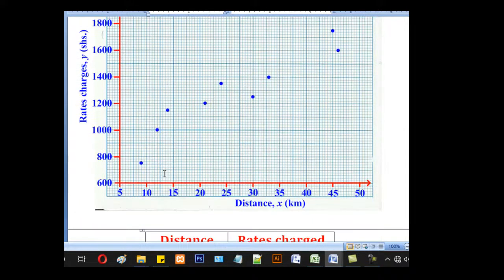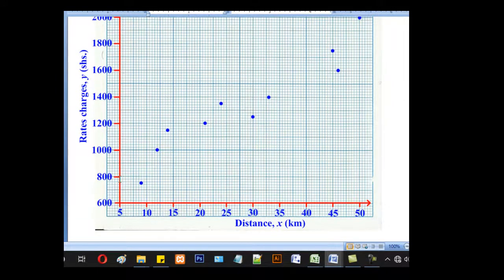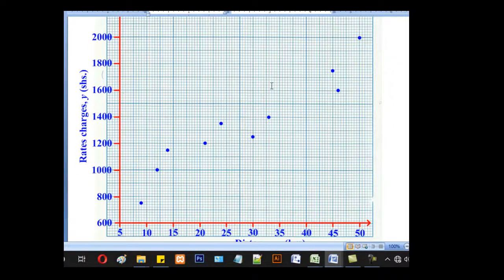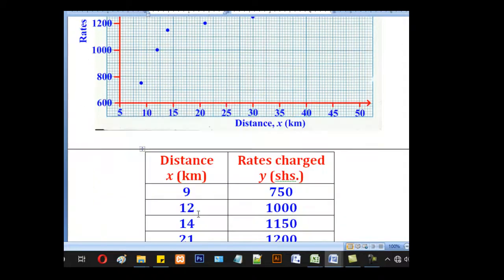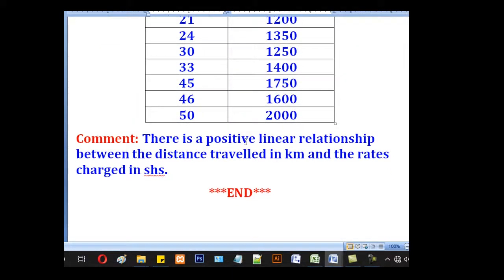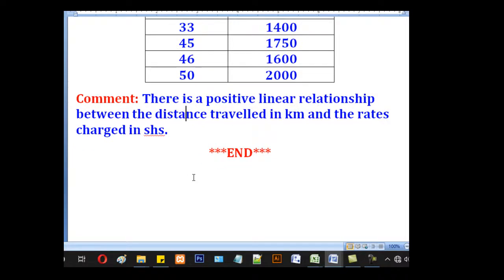And the next part, they wanted us to comment on our relationship. So when you look at these points, the scattering region will be in this form. Meaning there is a positive linear relationship. So that will be our comment. Positive linear relationship between the distance traveled in kilometers and the rates charged in shillings. That has been the lesson for today.